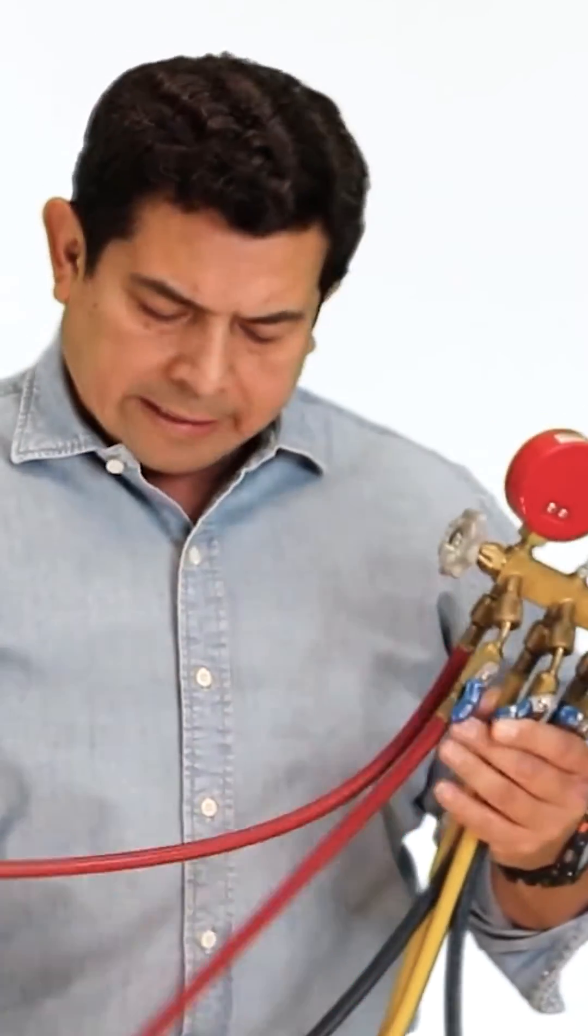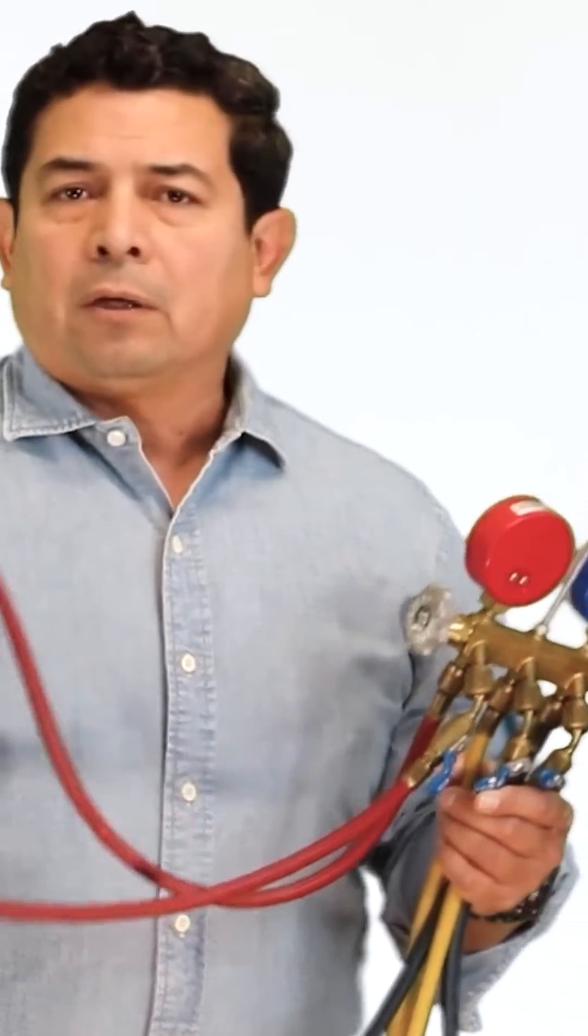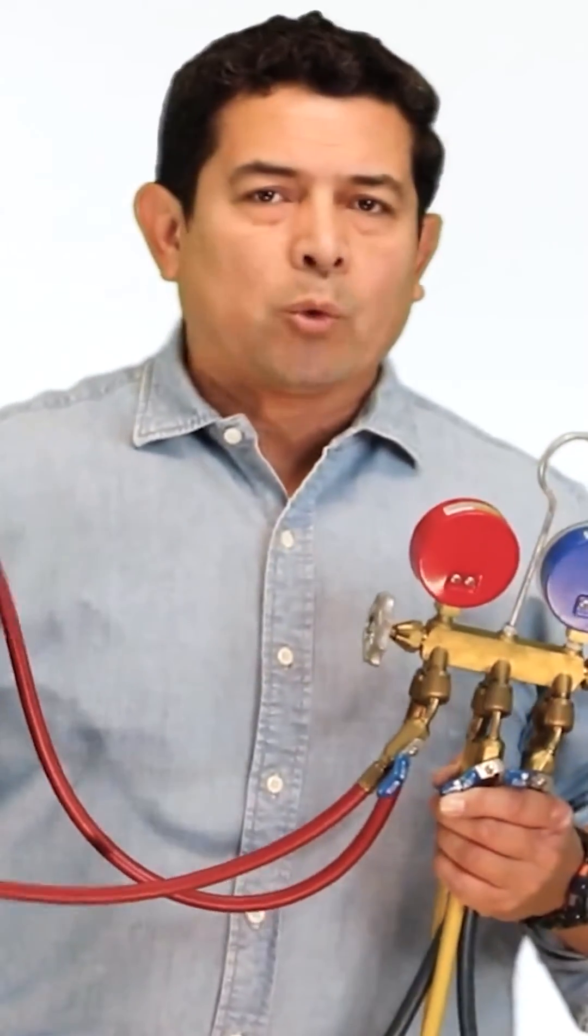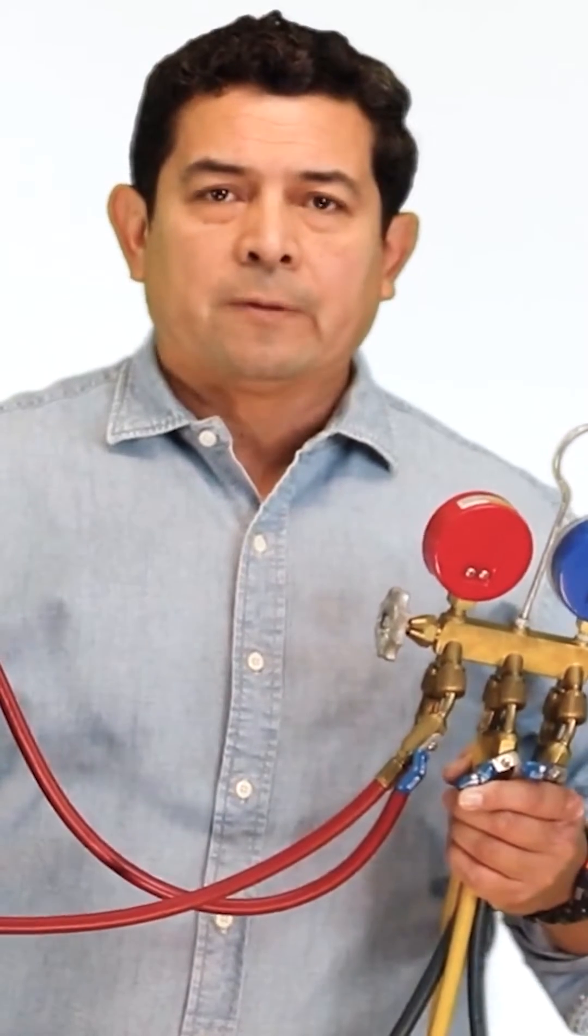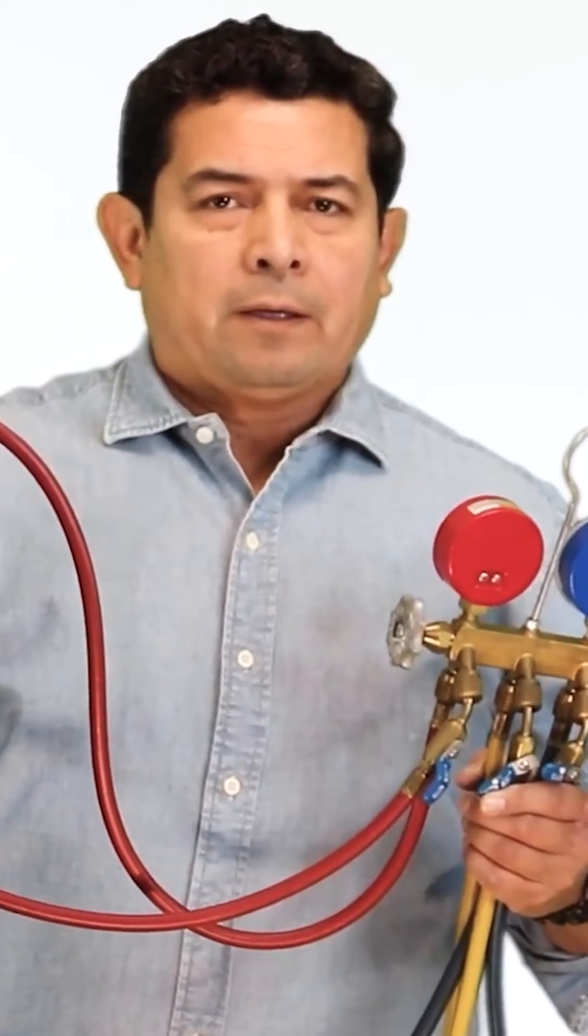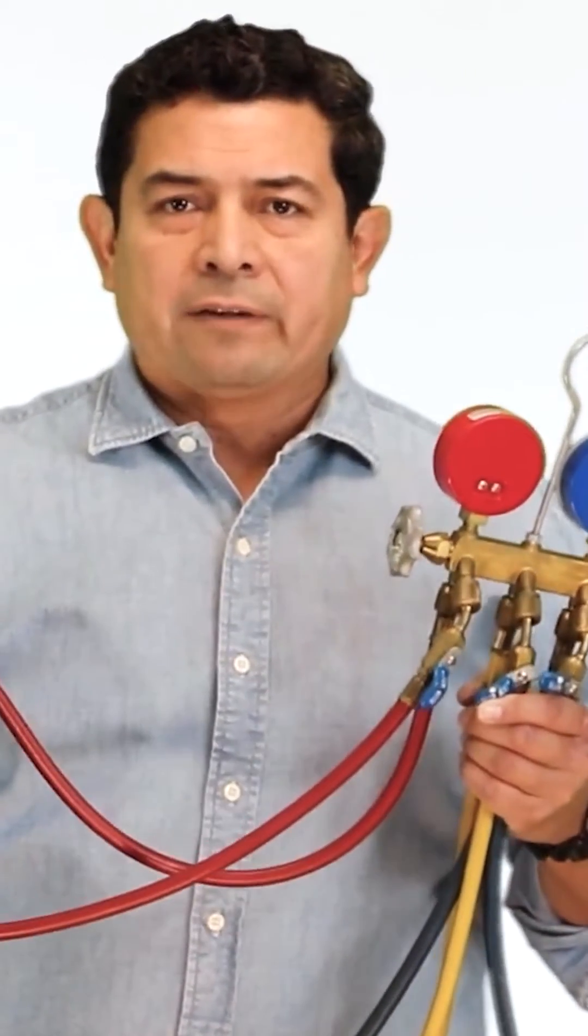The other thing is, inside of here, refrigerant is going to travel inside these hoses. Along with the refrigerant, you're always going to have oil traveling through. So that means there's going to be oil in here, and sometimes it's very hard to get all of the refrigerant out.